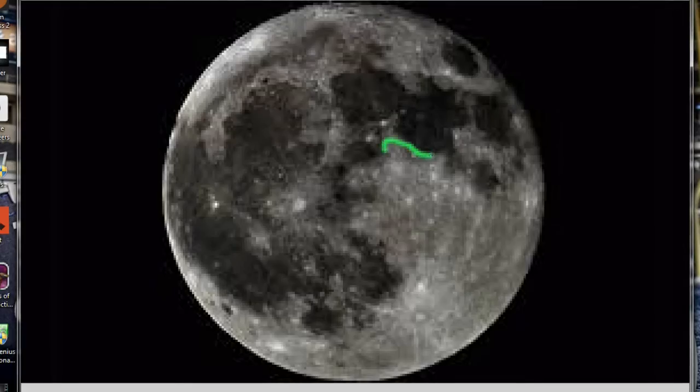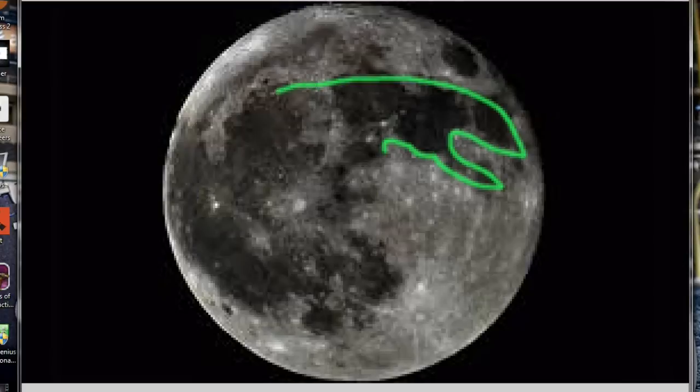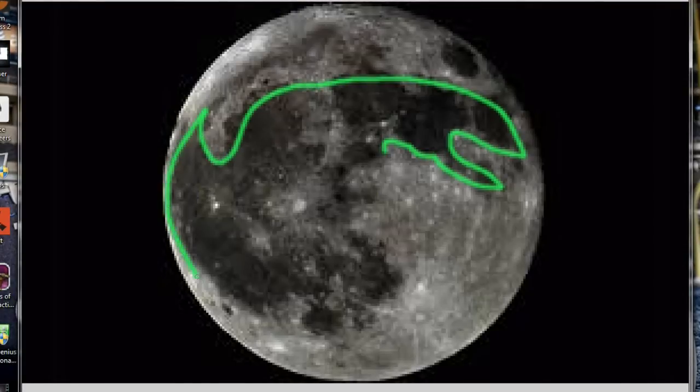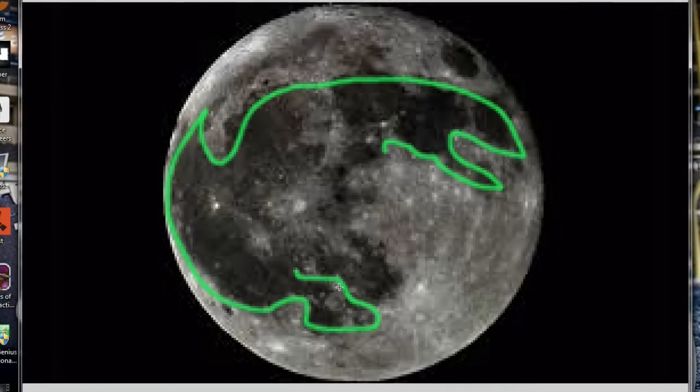So here we go, I got the moon pulled up on a paint application, paint.net. Great free drawing application that's a lot better than Windows Paint I think. And here I am drawing the outline of the bunny rabbit. You see the two ears at the top and this is what I've always seen. Right down here we're down at his feet. Here's one leg and you can kind of see these lines even in the shadows of the moon. Here's its other leg.